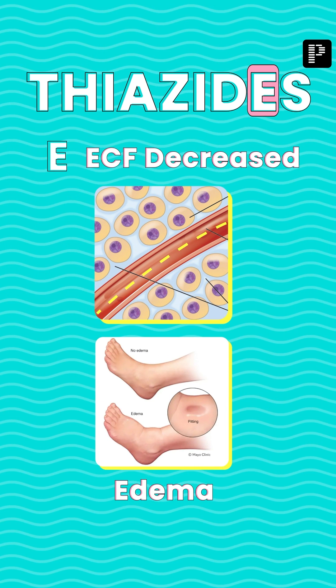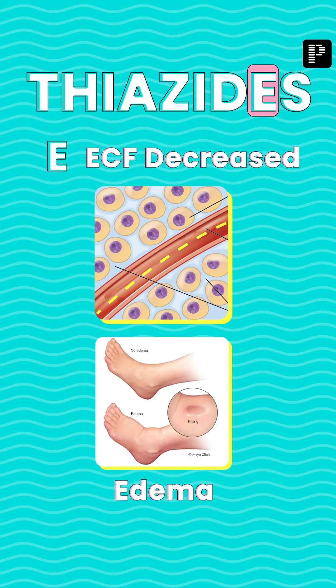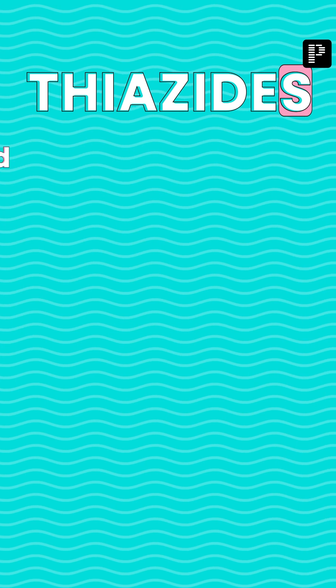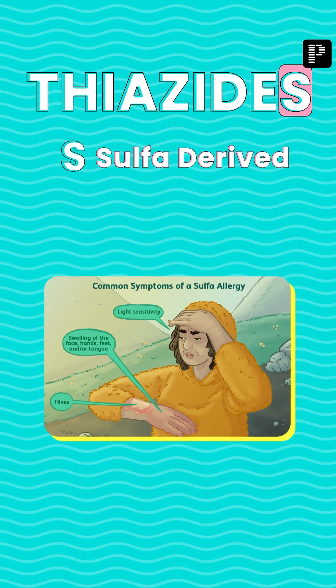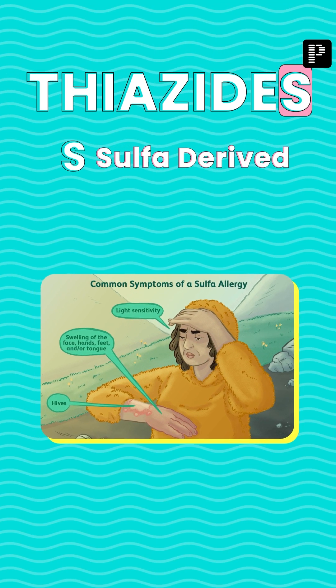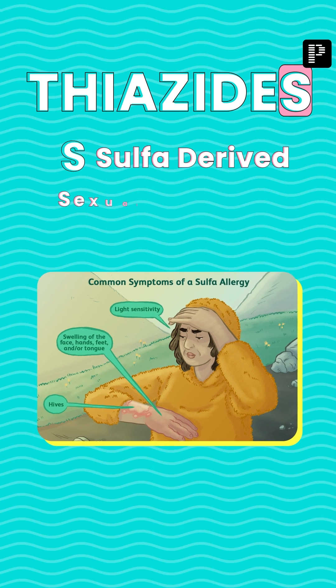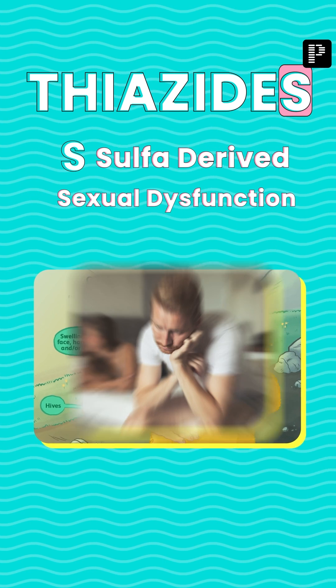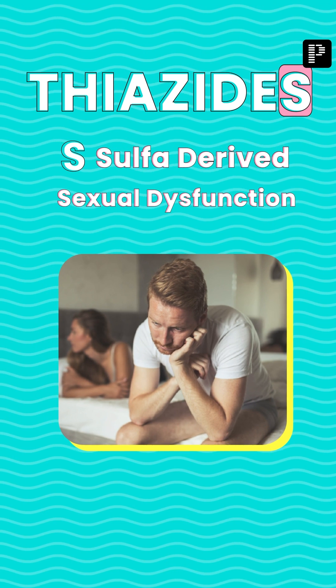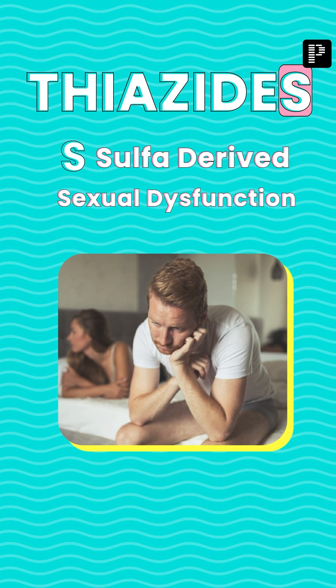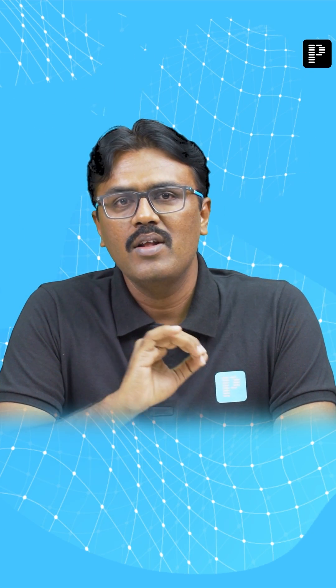The next letter is E — E stands for ECF, which is decreased by these drugs, and they are used in edema conditions. The last letter is S — S stands for sulfa derivative. These are sulfa derivatives, so there is a risk of allergy. S also stands for sexual dysfunction — particularly erectile dysfunction, which is seen with thiazides.